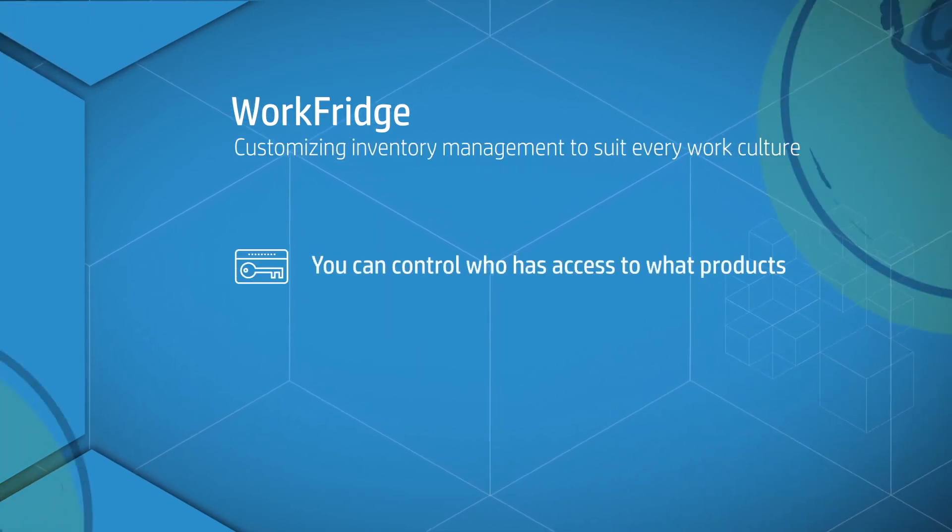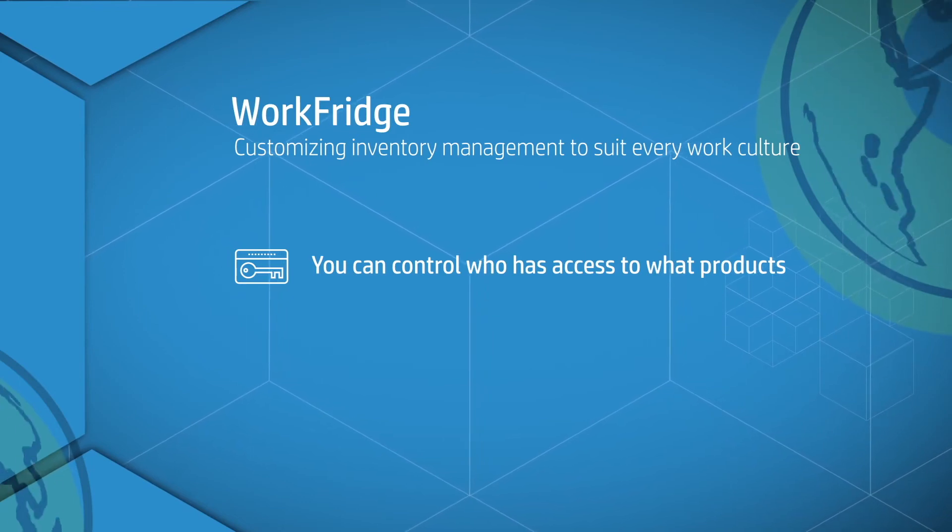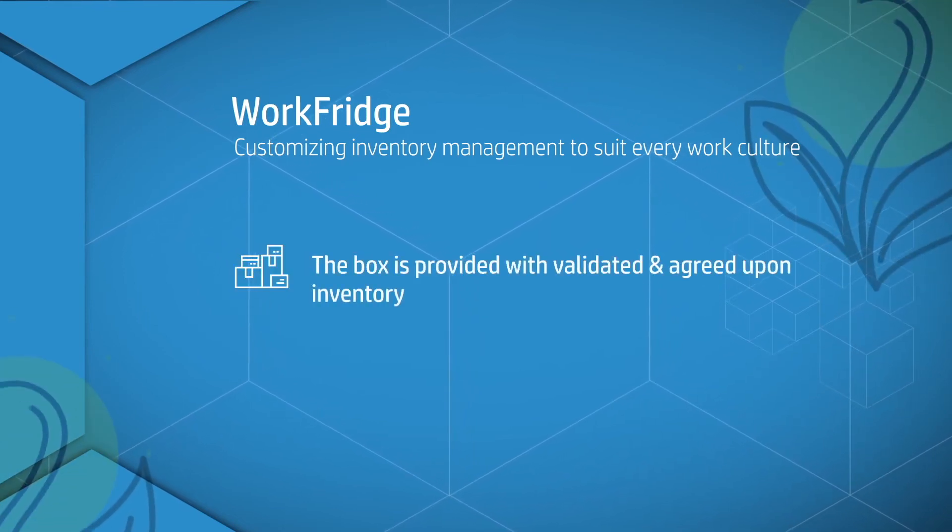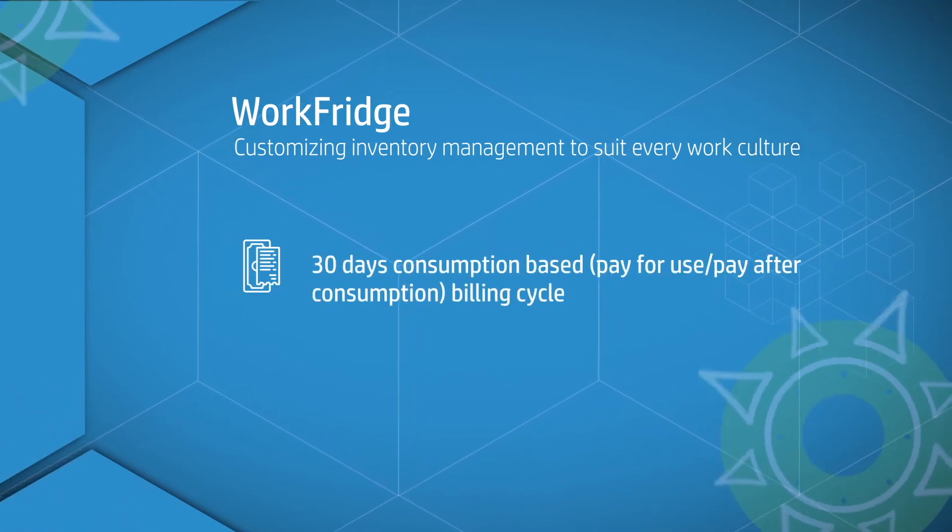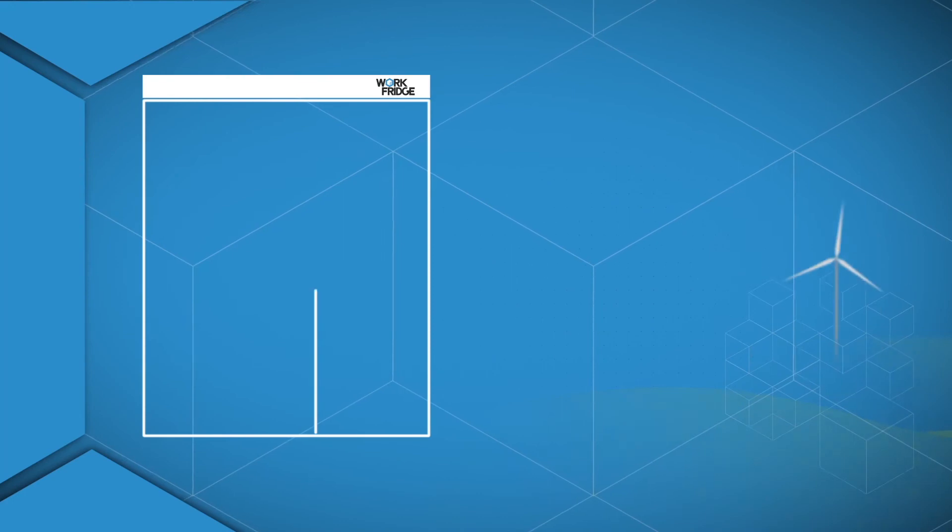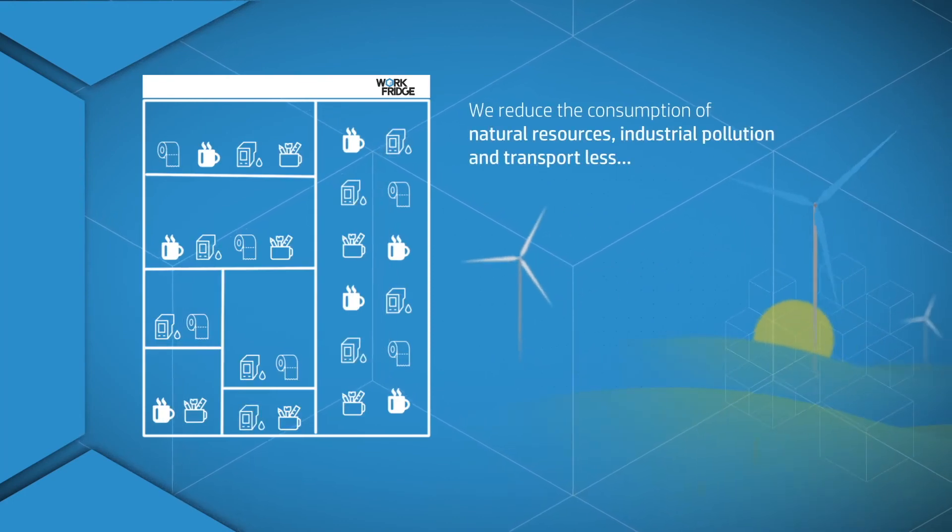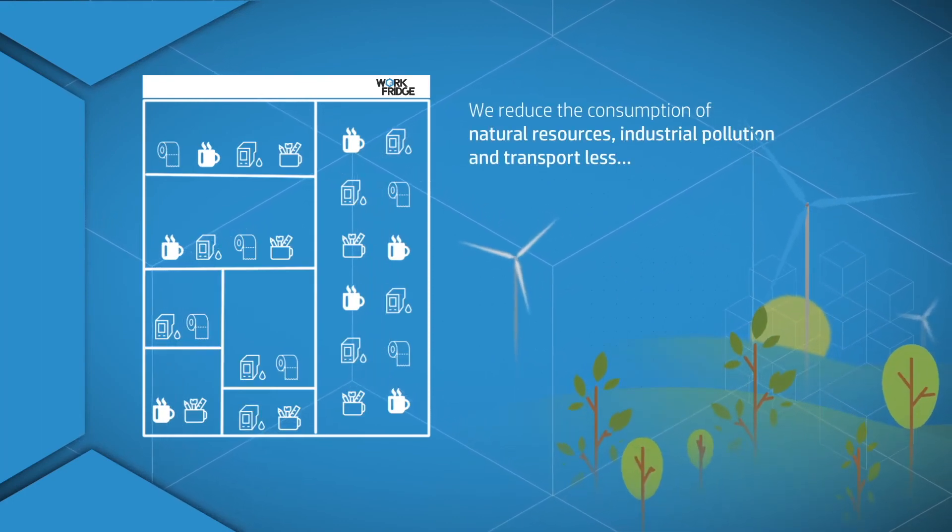You can control who has access to what products. The box is provided with validated and agreed-upon inventory. Bring down operational expenditure and build an ecosystem which can impact the environment with sustainable products.